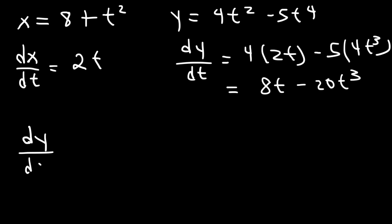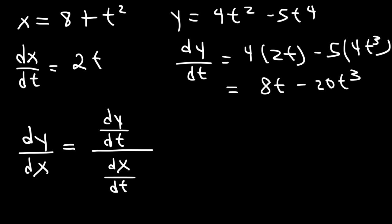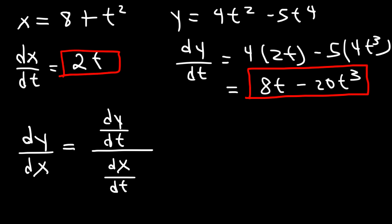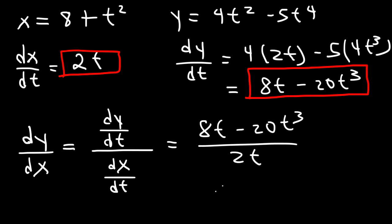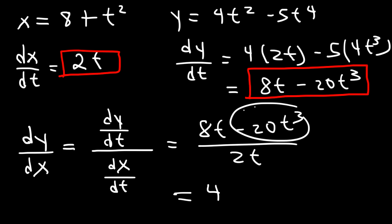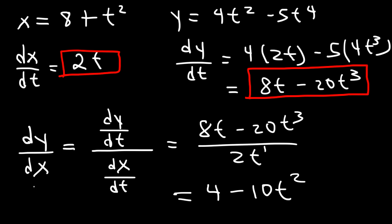In order to find a function for dy/dx, it's simply dy/dt divided by dx/dt. So all we need to do is divide this expression by this one, giving us 8t minus 20t to the third divided by 2t. We can divide each term by 2t: 8t divided by 2t gives us 4, and negative 20t cubed divided by 2t gives us negative 10t squared. So dy/dx equals 4 minus 10t squared.